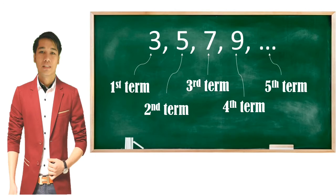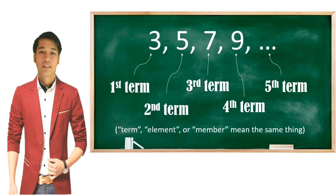An ellipsis indicates there are more numbers to follow. The words term, element, and member mean the same things — so ang mga salitang term, element, o member ay pare-parehas lang.